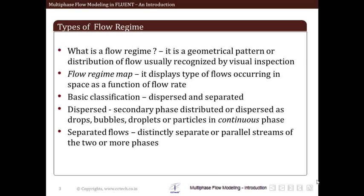There is another terminology associated with flow regime called the flow regime map. A flow regime map displays the type of flows occurring as a function of flow rate. As we go on changing the flow rate, the flow regimes may change. Within a specific range of flow rates for a specific geometry or phenomenon there is an associated flow regime. If we plot a graph where the x-axis is the flow rate, on the y-axis we obtain different flow regimes — this is the flow regime map.